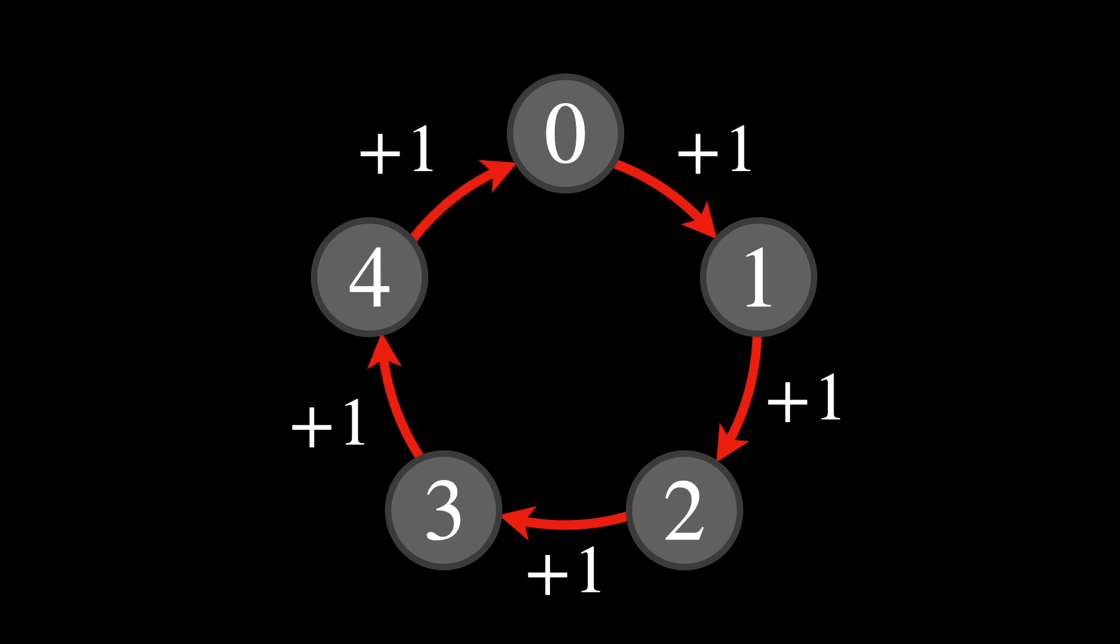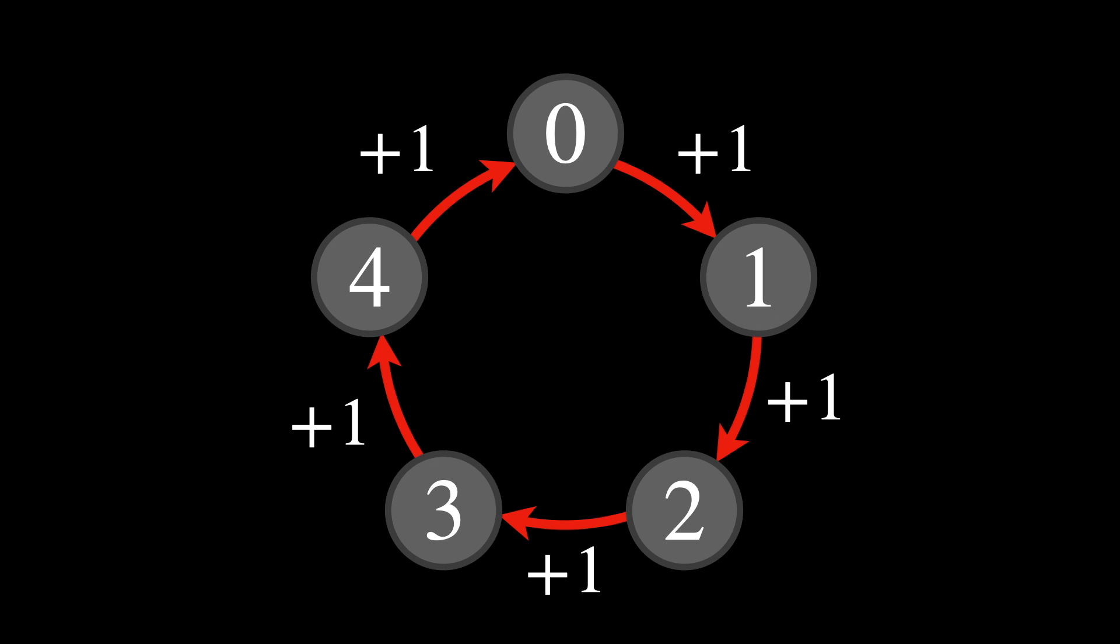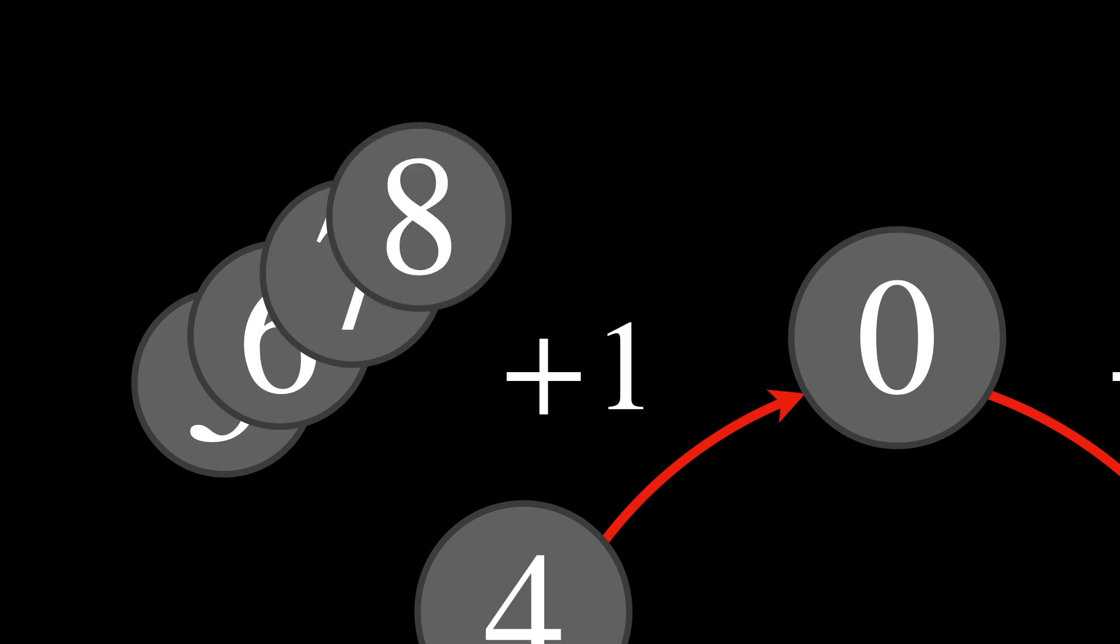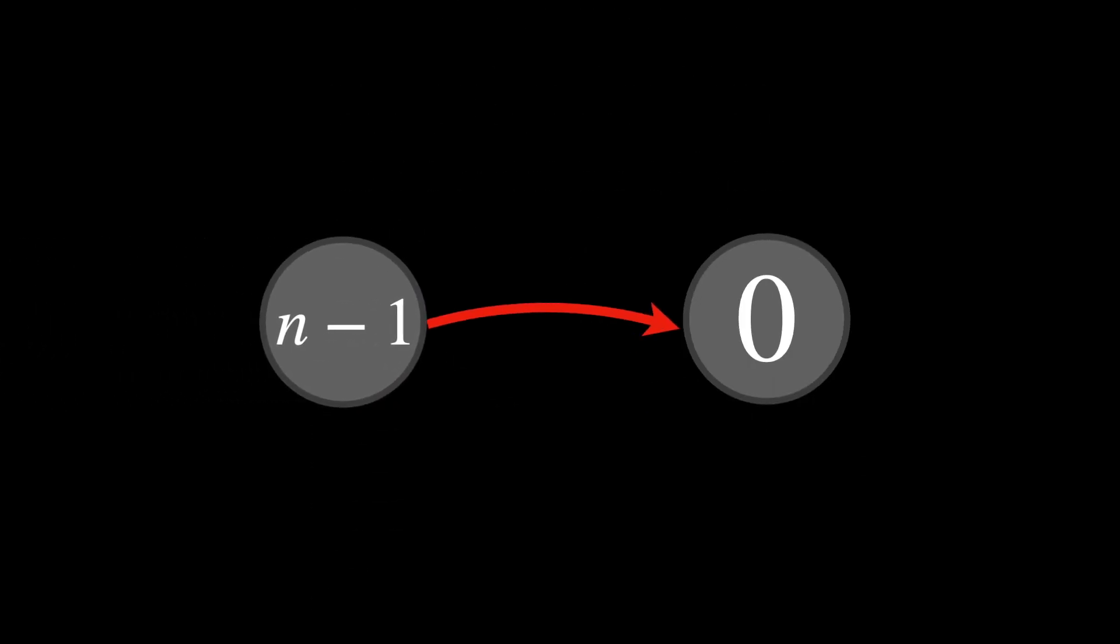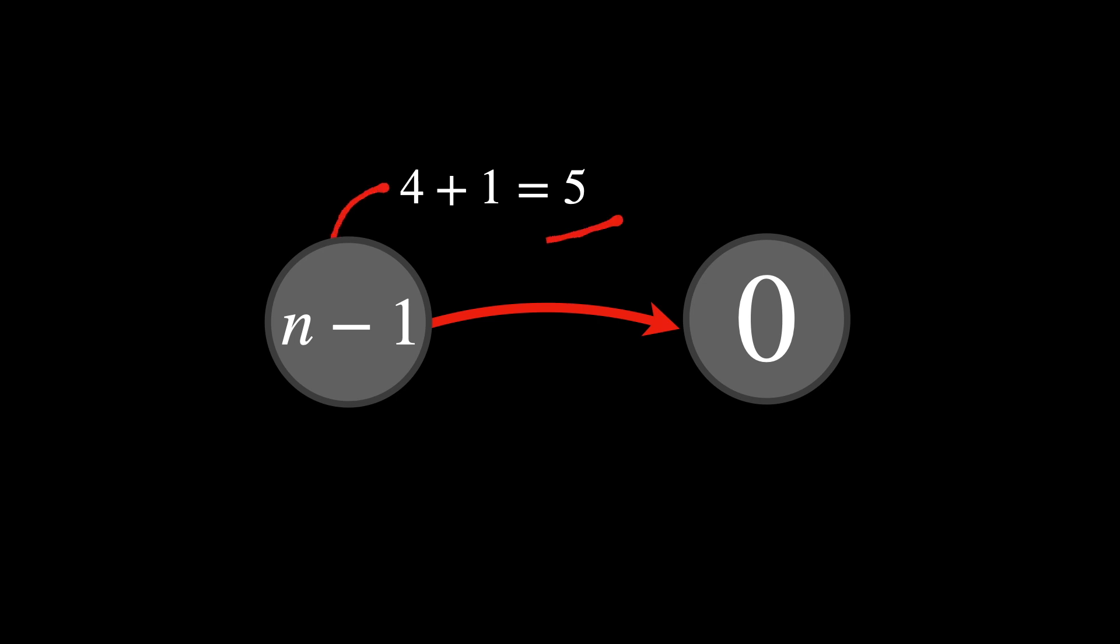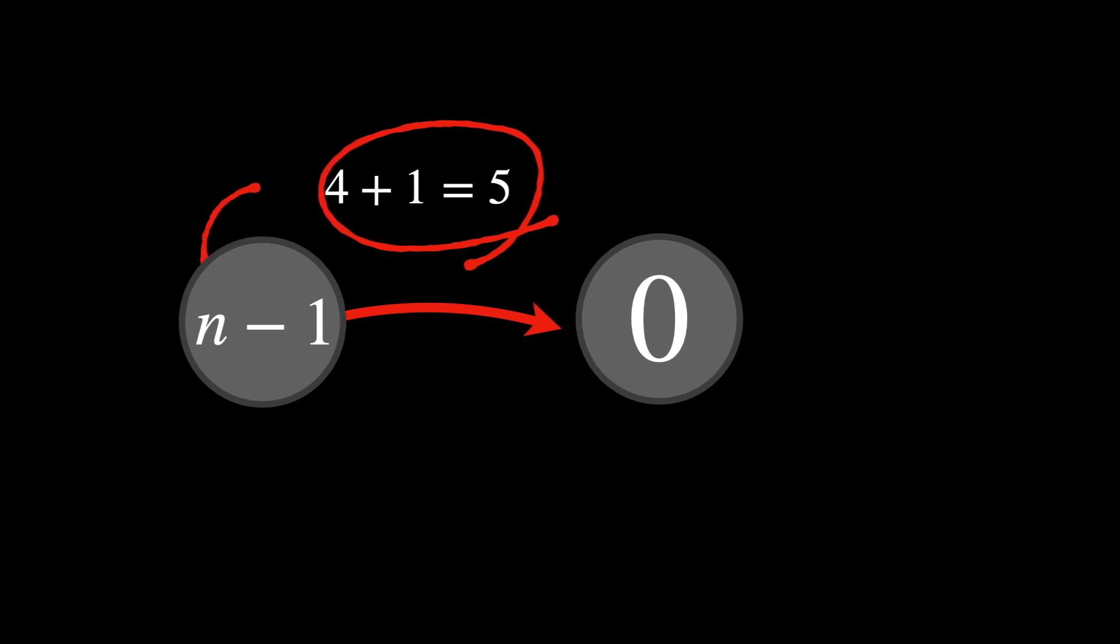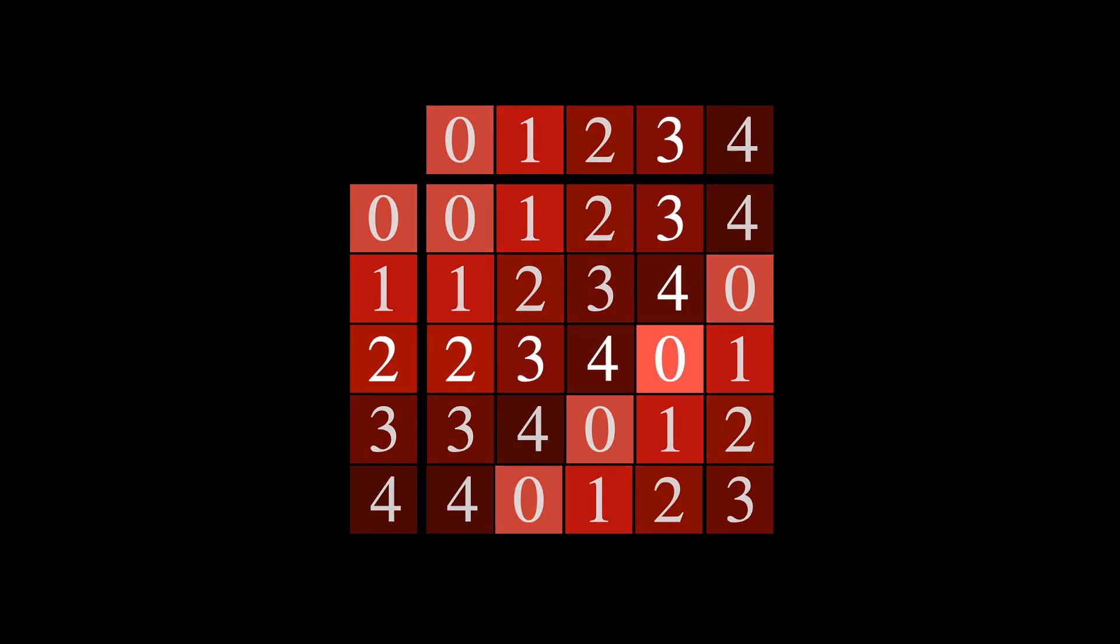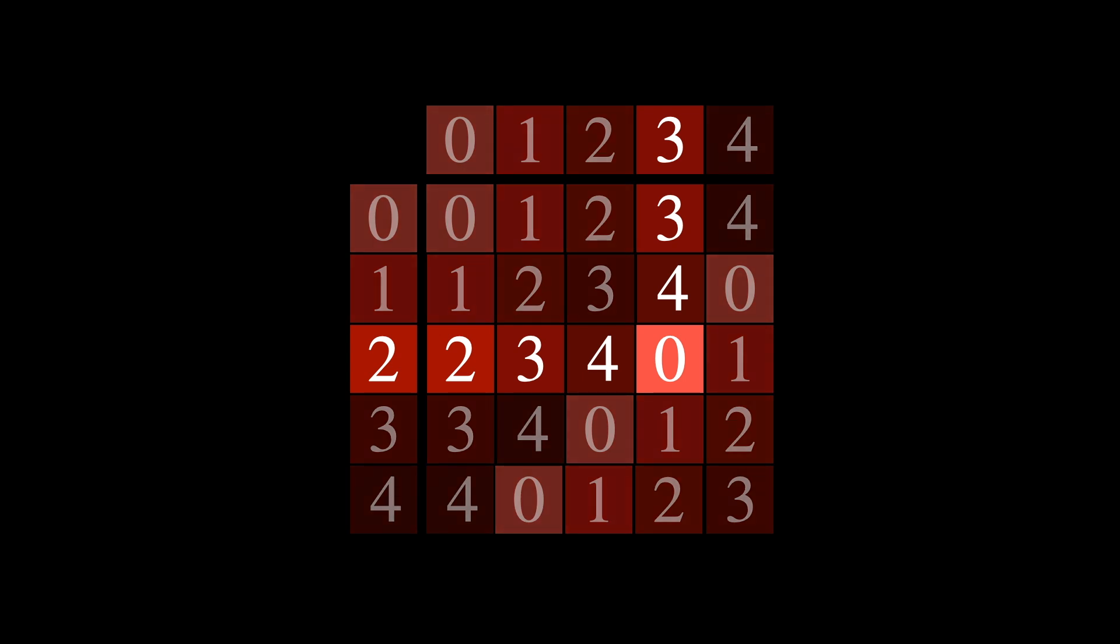So every element of the group is generated by repeatedly adding 1, but the numbers don't increase infinitely. After we reach 4, we go back to 0. This is what is known as modular addition. 4 would otherwise be known as N-1, since 4 plus 1 equals 5, which completes the cycle by bringing us back to 0. If we were to represent that on a Cayley table, we'll see that clearly in cases like 2 plus 3 equals 0, or 4 plus 3 equals 2.